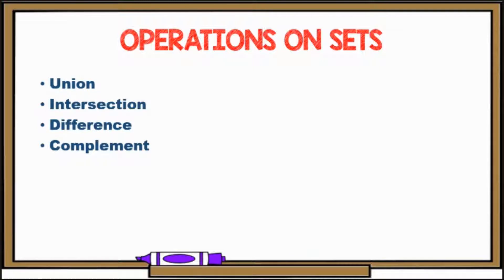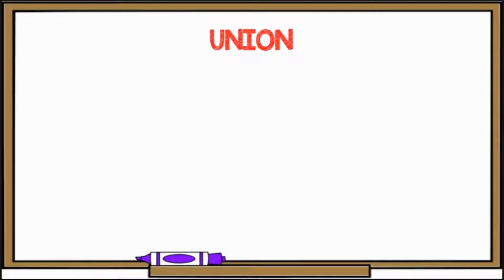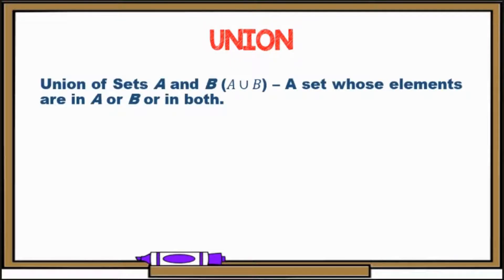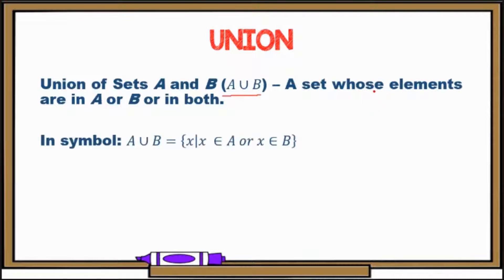Let's start with union. For the union of sets, this is denoted by this symbol. The union of sets A and B is a set whose elements are in A or B or in both. In set builder notation, A union B is equal to the set of all X such that X is an element of A or X is an element of B.